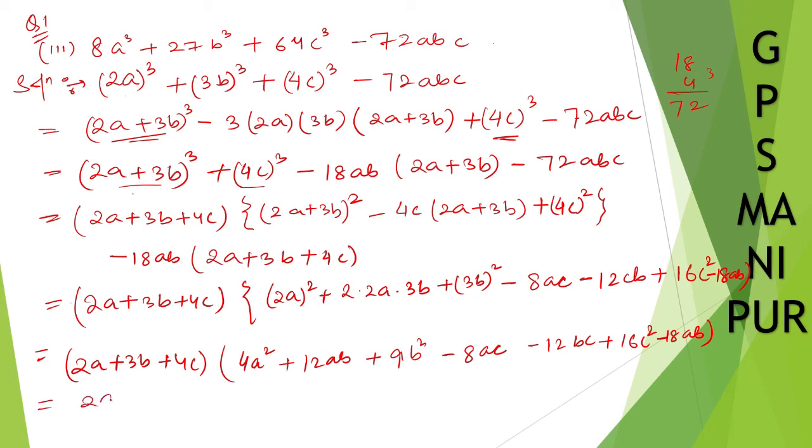Let me write down the final answer. 2a plus 3b plus 4c. 4a square, this one done. Take plus 9b square plus 9b square and take plus 16c square plus 16c square.